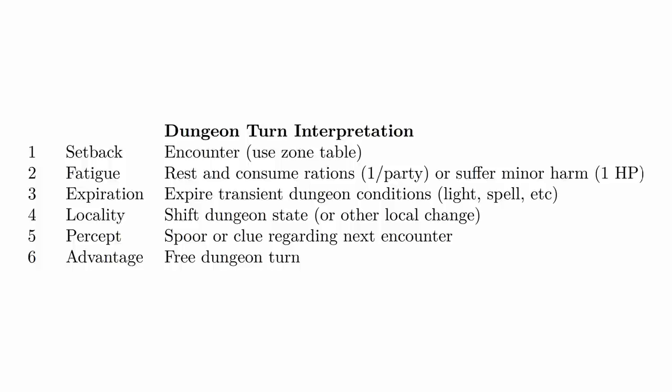So that expiration result would be like your torches going out. Number four, locality would be to shift the dungeon state or some other local change. Number five, percept would be you notice a spore or a clue regarding the next encounter. And number six, advantage would be a free dungeon turn where nothing bad happens. The Hazard System essentially works as a kind of engine of gameplay, where players move through a normal dungeon and the hazard die is throwing complications at them — encounters are happening, their torches are going out — but it's rarely boring.